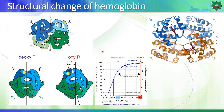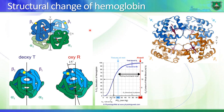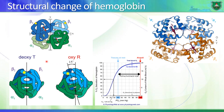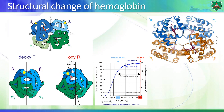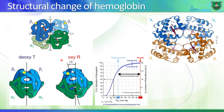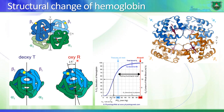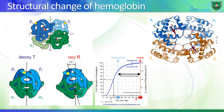Hemoglobin has two structures: the T form and the R form. These two structures differ not only in the orientation or three-dimensional position of amino acids — due to movement of the polypeptides as a result of oxygen binding — but also in their oxygen binding affinity. The T form has a low affinity towards oxygen and the R form has a high affinity towards oxygen, as seen in the oxygen saturation curve.